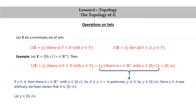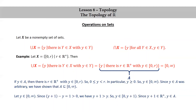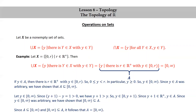Now going the other way, let y be in the infinite closed interval 0 to infinity. Since y plus 1 minus y is 1, which is a positive number, we have that y plus 1 is greater than y. Which means that y is not just in 0 to infinity, but it's actually in the interval 0 to y plus 1. And since y plus 1 is a positive real number, y is in the set A by the definition of A. So since we picked an arbitrary real number in 0 to infinity, we have shown that 0 to infinity is a subset of A. By the axiom of extensionality, A is equal to the infinite closed interval 0 to infinity.